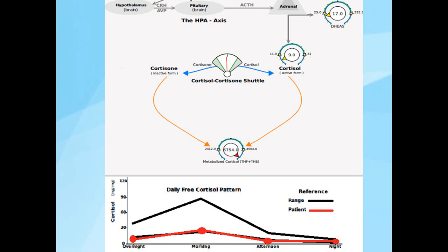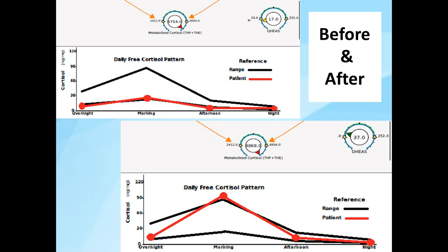Here are case studies that highlight the clinical utility. A patient presents with a low free cortisol pattern — the total free cortisol for the day is low — but metabolized cortisol is high, and DHEAS is also low. In a before-and-after comparison, the top results show low free cortisol and high metabolized cortisol. This patient was put on an adrenal product to support adrenal production, and the free cortisol pattern was restored to levels more in line with expectations — slightly high in the morning but more or less appropriate.